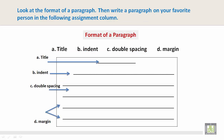Let's look at the format of a paragraph. You have title, indent, double spacing, and margin. You want to put your title at the top of the page. You want to indent — basically, move five spaces in and then write your first word. Double spacing means there is spacing between each sentence or line. And margins are on the side of the paper.